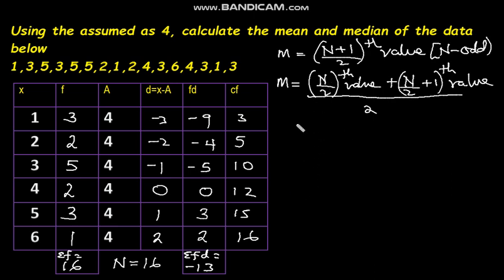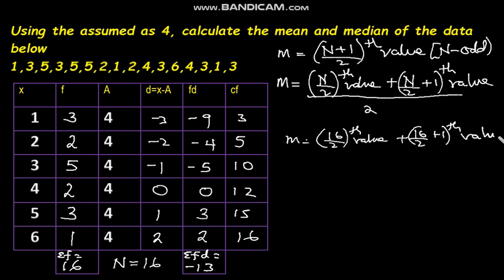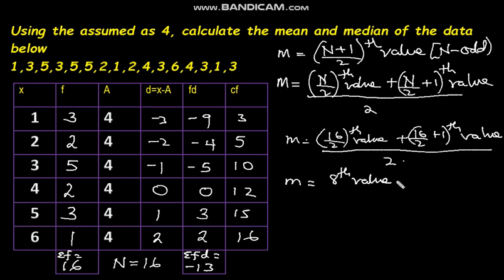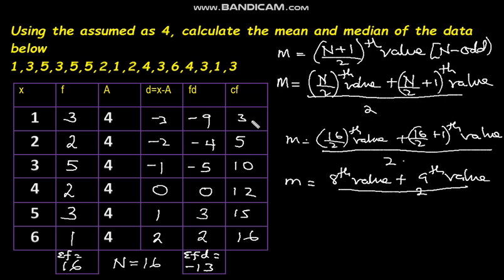Since n is 16, n divided by 2 is 8, so we need the value in the 8th position. And 16 divided by 2 plus 1 is 9, so we need the value in the 9th position, everything divided by 2. These positions are found along the column of the cumulative frequencies.